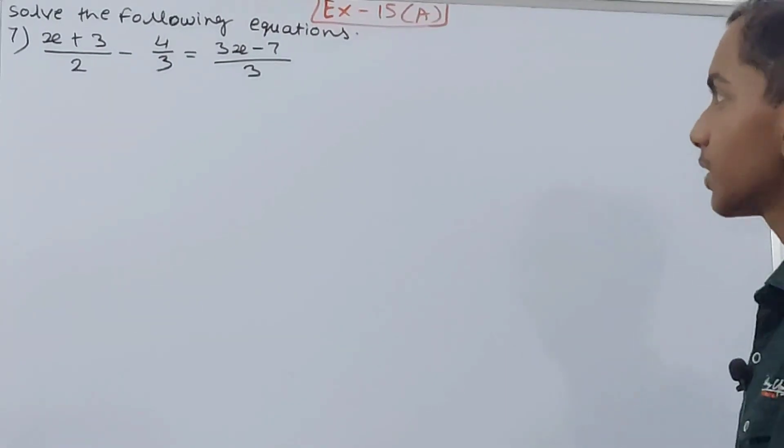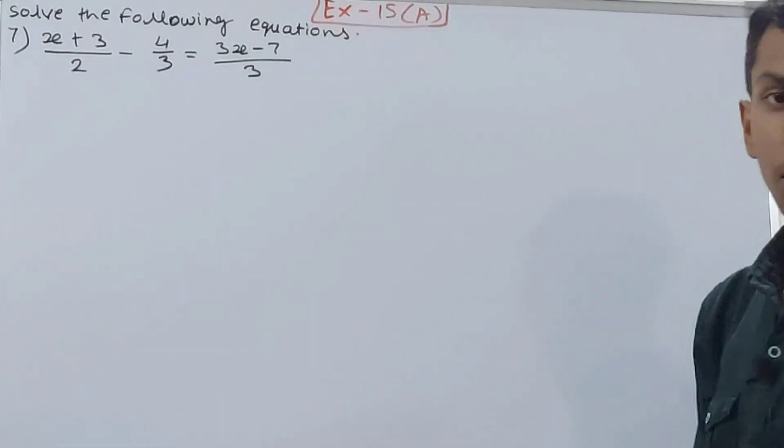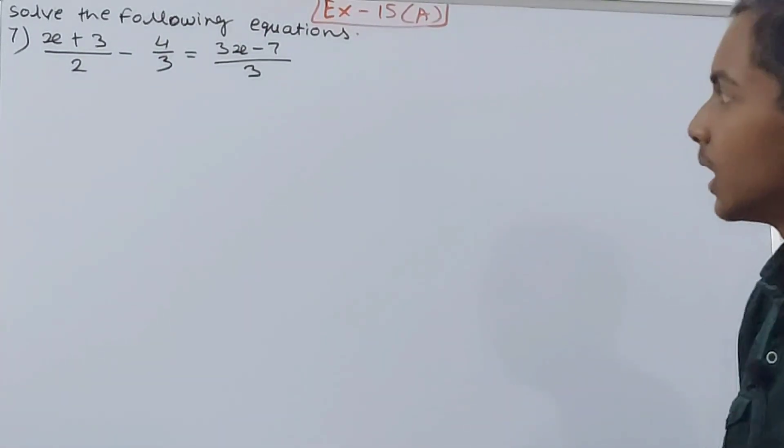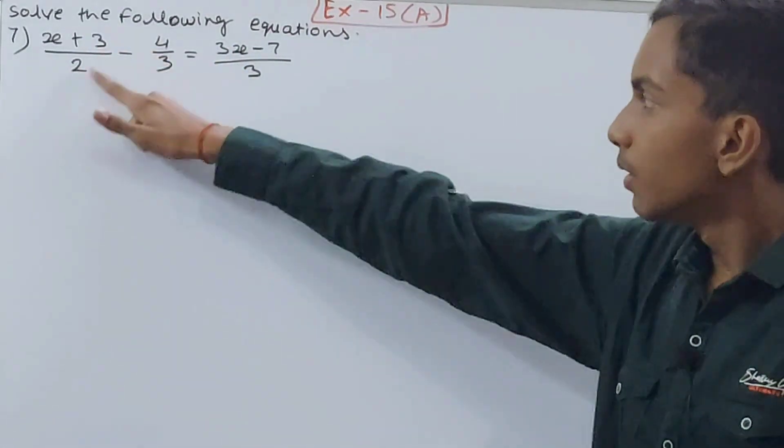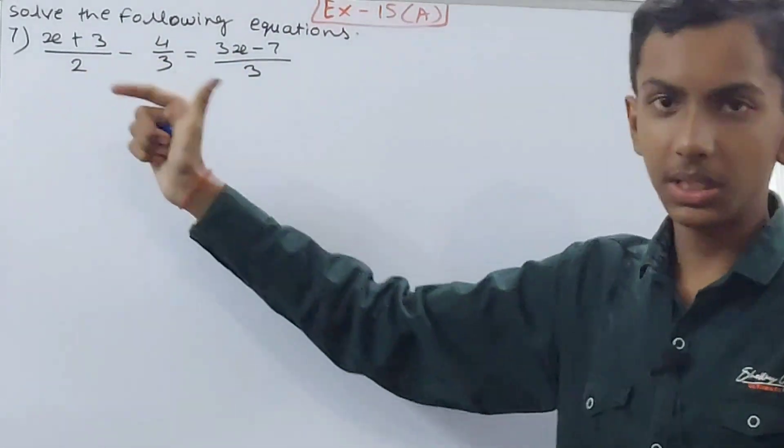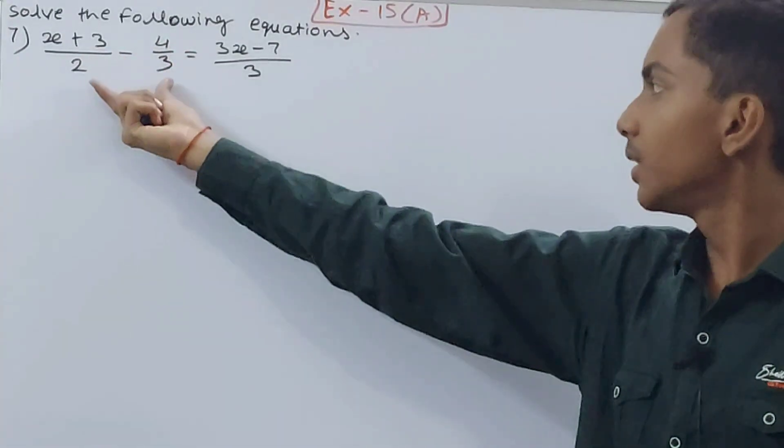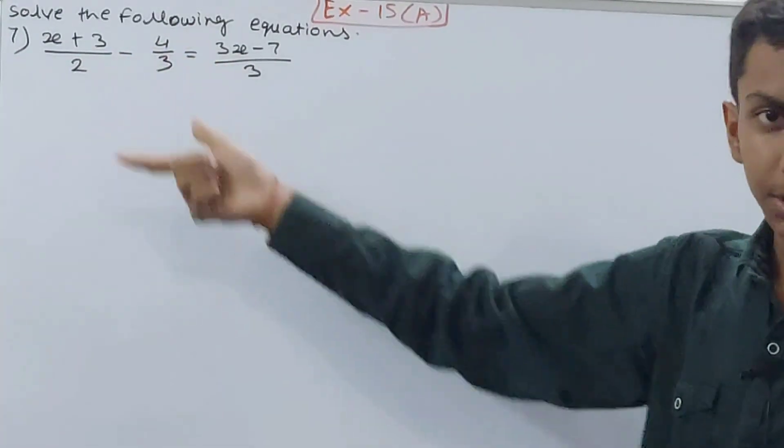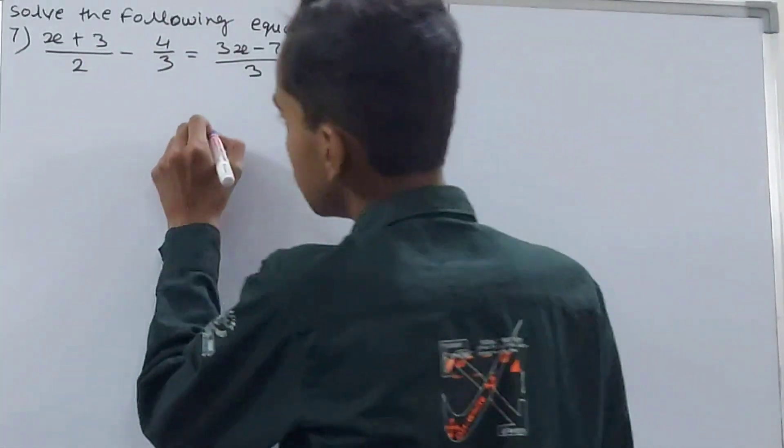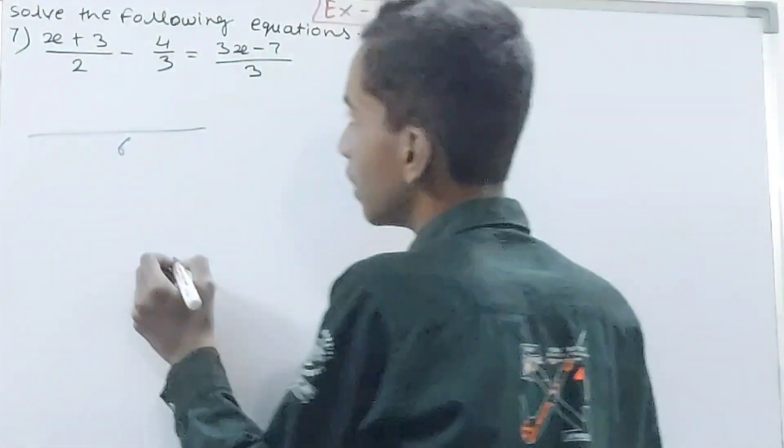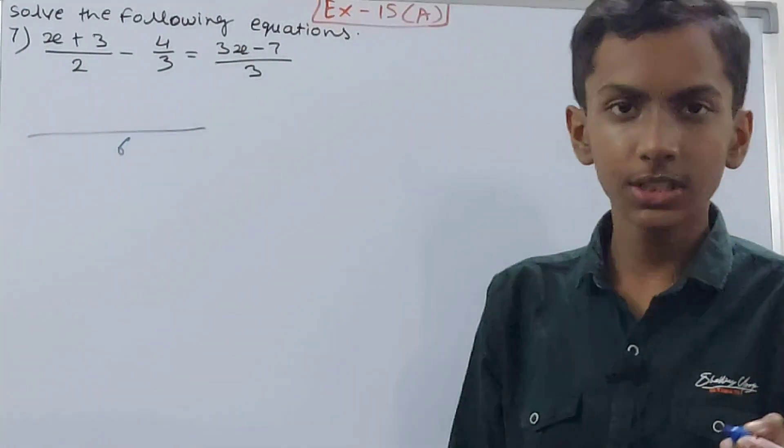equals (3x-7)/3. Now in this question you can see we have to do subtraction here, right? So just like we do regular subtraction, same thing here. We will take the LCM of the denominators, then multiply the numerators accordingly. LCM of 2 and 3 is 6.